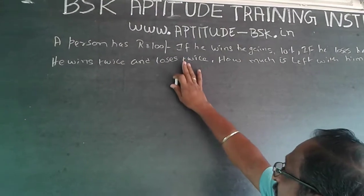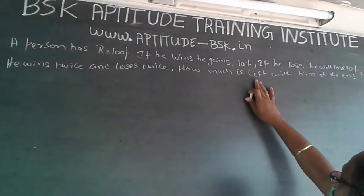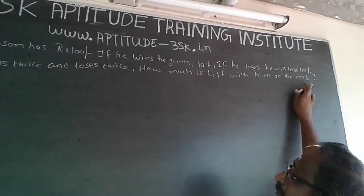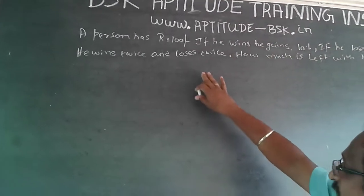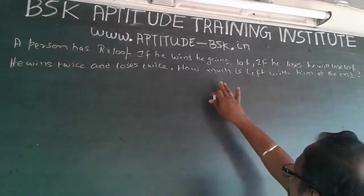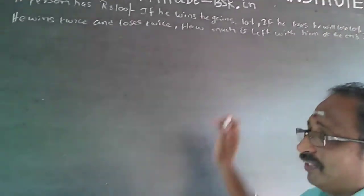A person has rupees 100. If he wins, he gains 10 percent. If he loses, he will lose 10 percent. He wins twice and loses twice. How much is left with him at the end?